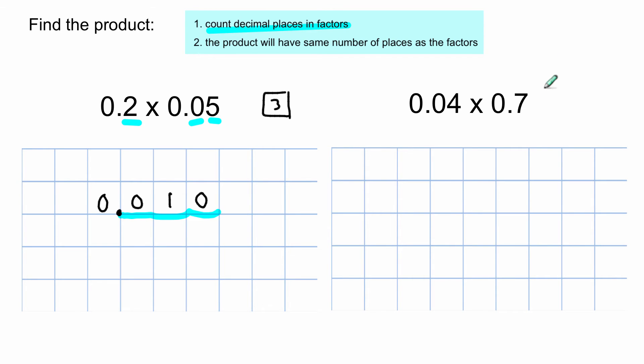So let's move on to the next one. It is 0.04 times 0.7. Count the decimal places. There's one, two, and a total of three. Make a note of that. There's three decimal places that are going to be in the product. Now I use mental math. 4 times 7. I write the answer, which is 28.